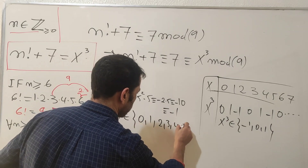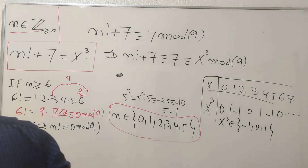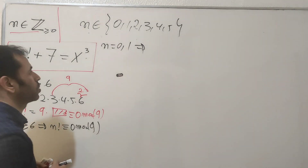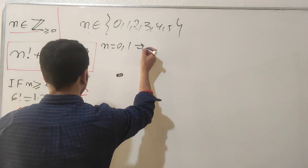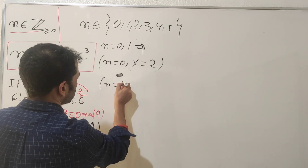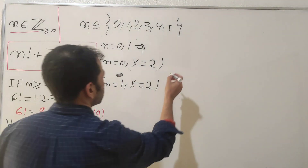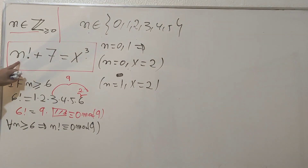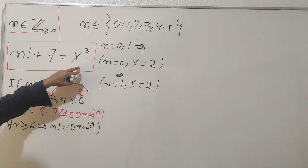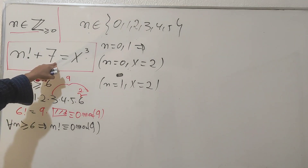Now let's check case by case. For n = 0 or n = 1: n factorial equals one, and one plus seven is eight, which equals two cubed. So we get the first solutions: n = 0 gives x = 2, and n = 1 also gives x = 2. For n = 2: two factorial is two, and two plus seven is nine, which is not a perfect cube. For n = 3: three factorial is six, and six plus seven is 13, which is not a perfect cube. For n = 4: four factorial is 24, and 24 plus seven is 31, which is not a perfect cube.